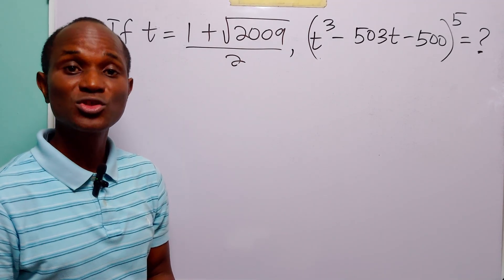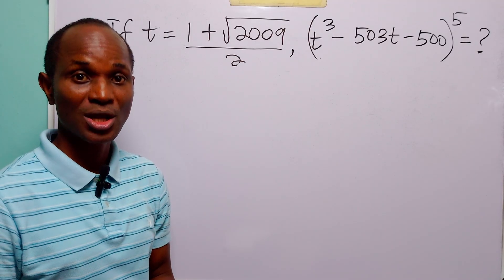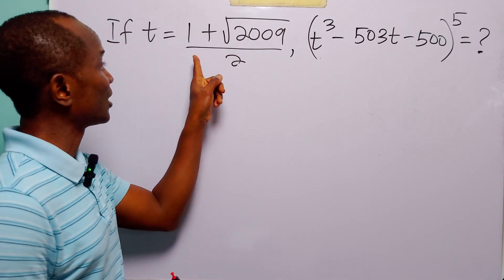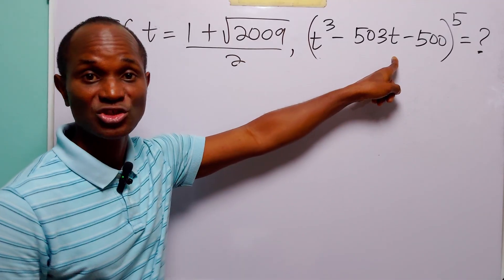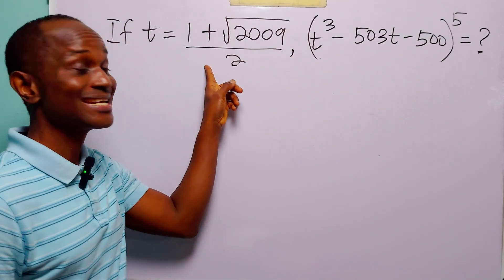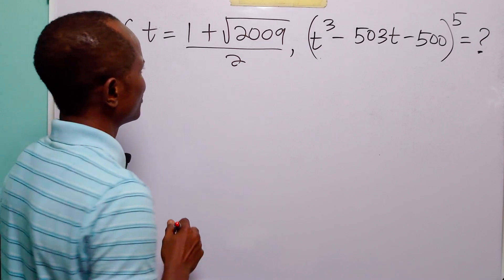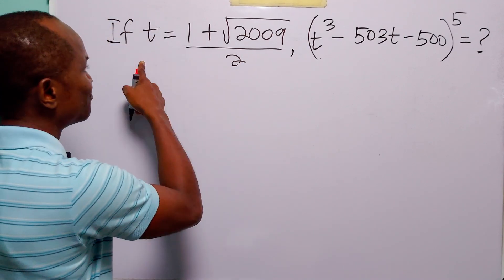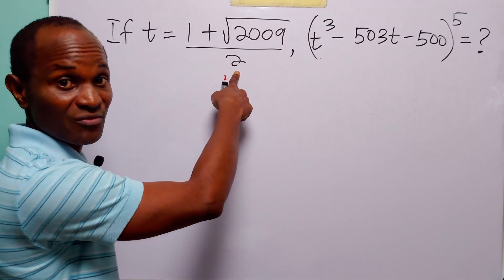In the first method, we will do something that looks like direct substitution. But we won't just plug this value of t into this expression. First of all, we are going to rewrite this in a more manageable form. So what we are going to do is start by multiplying both sides of this equation by 2 to get rid of this fraction.